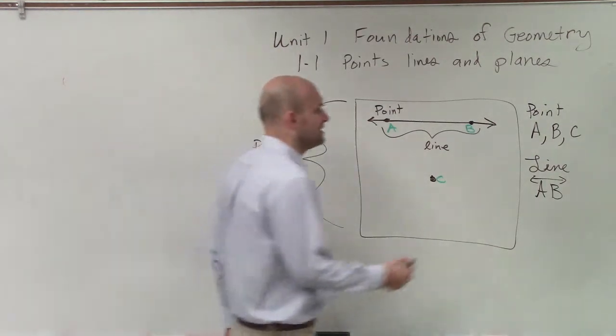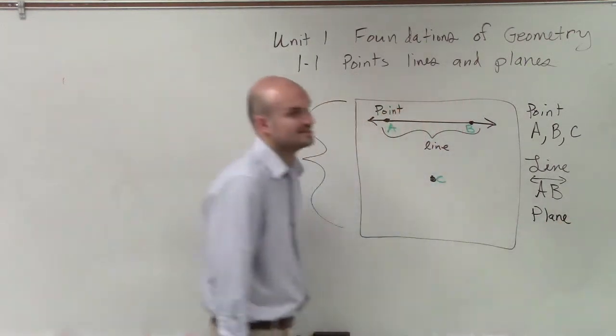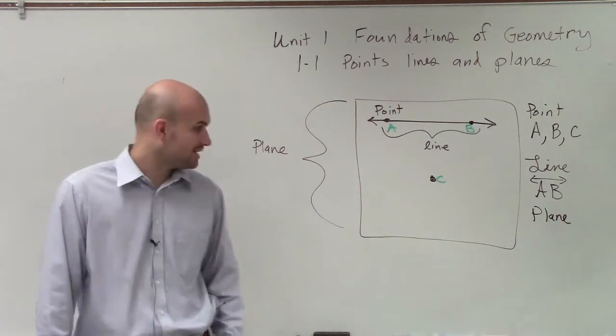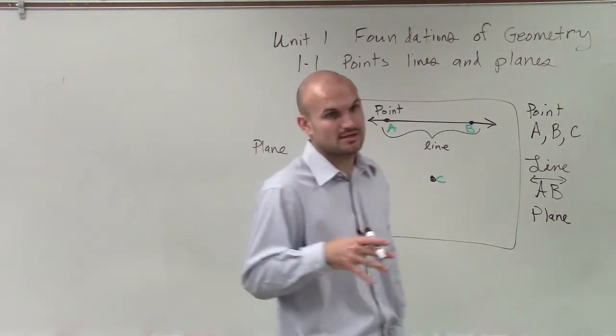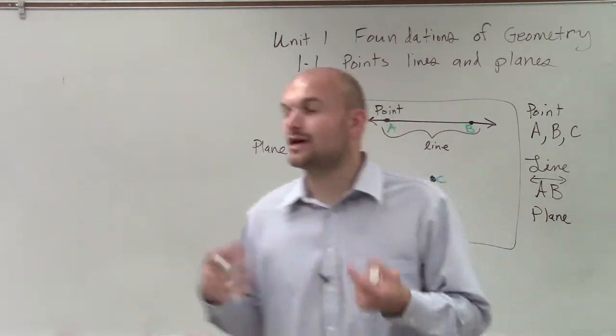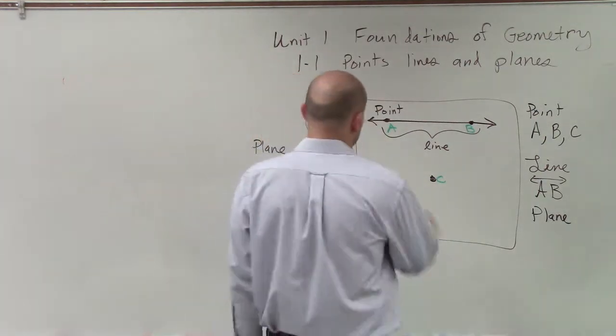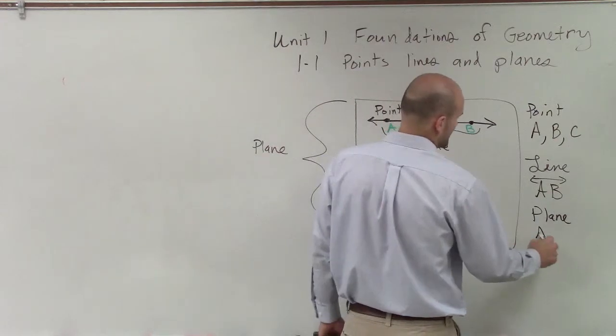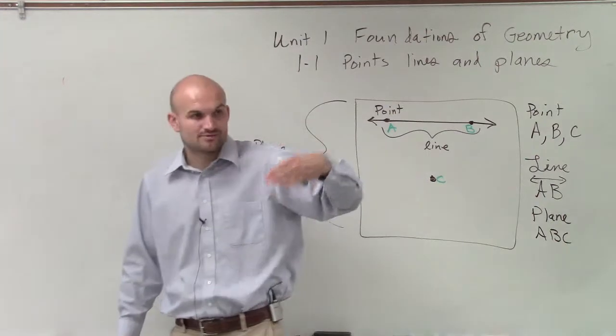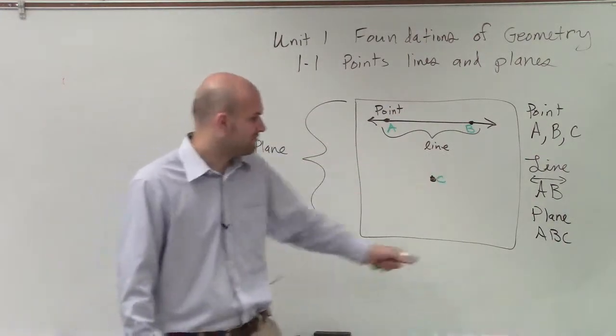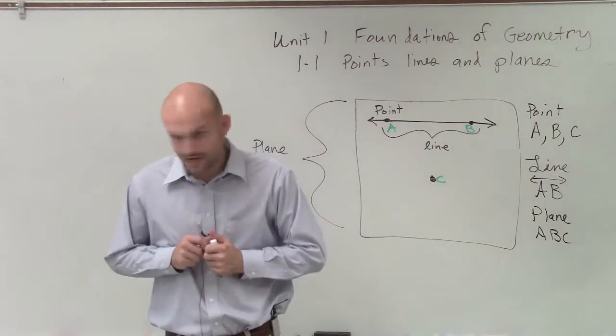And then lastly, a plane. So in this case, ladies and gentlemen, to be able to write a plane, a plane needs to contain at least three points. A line has two points, or at least two points. A plane, we're going to need to write with three points. So therefore, our plane, we could just write as ABC. Now we're not doing commas like our points, because points, we had three separate points. But for our plane, we'll just write it as ABC.